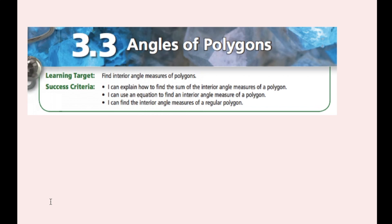In this lesson we are going to be finding interior angle measures of polygons. The success criteria is: I can explain how to find the sum of the interior angle measures of a polygon, I can use an equation to find the interior angle measures of a polygon, and I can find the interior angle measures of a regular polygon.